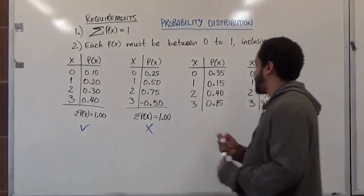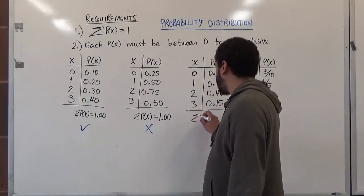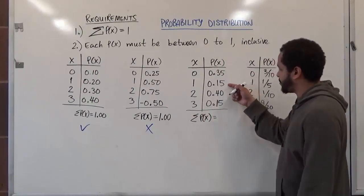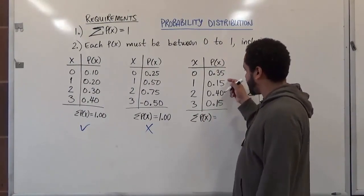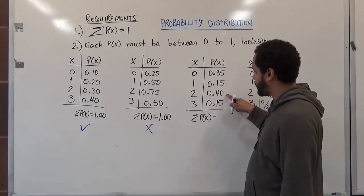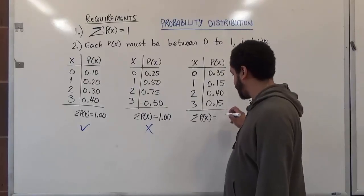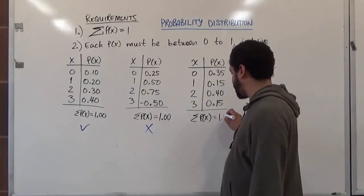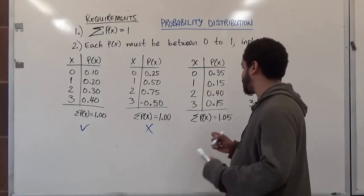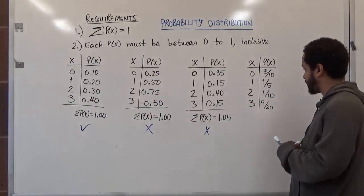Let's go to the third distribution and again take the sum of P(x). We have 0.5 plus 0.4, that's 0.9, plus 0.15 plus 0.15, giving us 1.05. That makes this probability distribution invalid, and we cannot use it to compute the probability distribution.